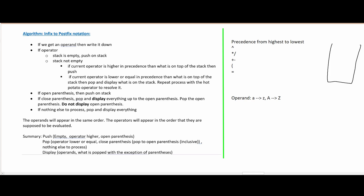So whatever we have — like if we have the symbol — we are going to just push it to the stack. However, if our stack is not empty, we're going to look at the operator. And if it is lower or equal in precedence to what is on top of the stack, then we are going to pop whatever we have that is greater than it and display it. We're going to keep doing this until we reach something that is greater than what we're being passed in. If we have open parentheses, then we push to the stack.